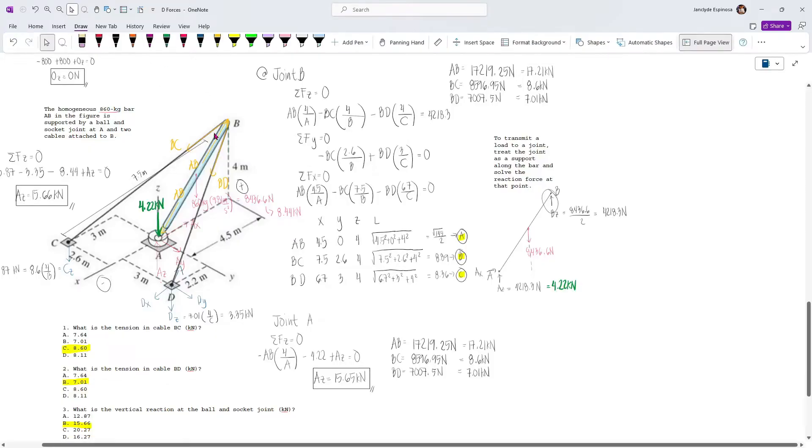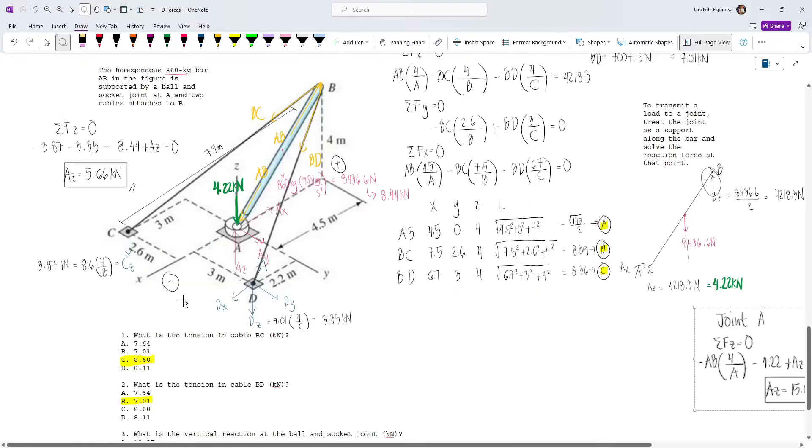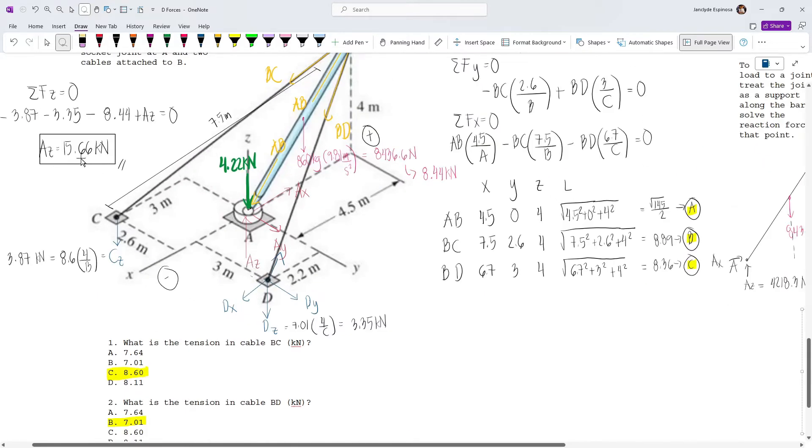Now, just for comparison, let's try to solve this problem, the vertical forces CZ, DZ, and AZ by using the method of moments. So let me just move this. In our answer earlier, we solved AZ and it was 15.66 KN. So we'll try to solve these. This one, this one, and also this one.